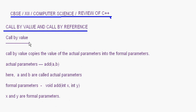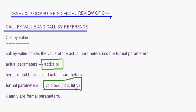Today we'll learn call by value and call by reference. A function can be called in two ways: call by value and call by reference. In call by value, whenever we call a function — for example, a function called 'add' passing two parameters a and b — the function call transfers control to the function definition, such as 'void add(int x, int y)'.